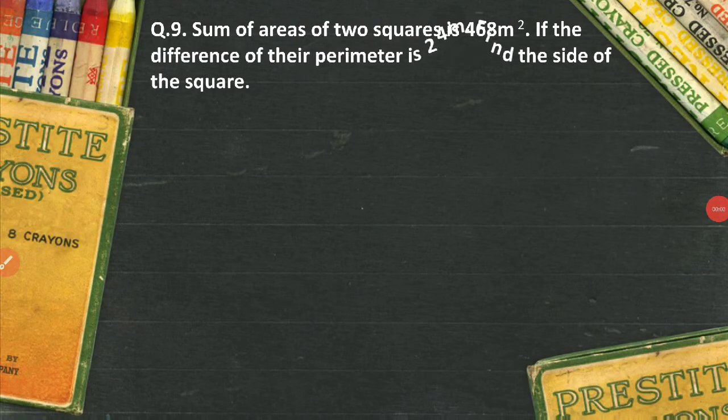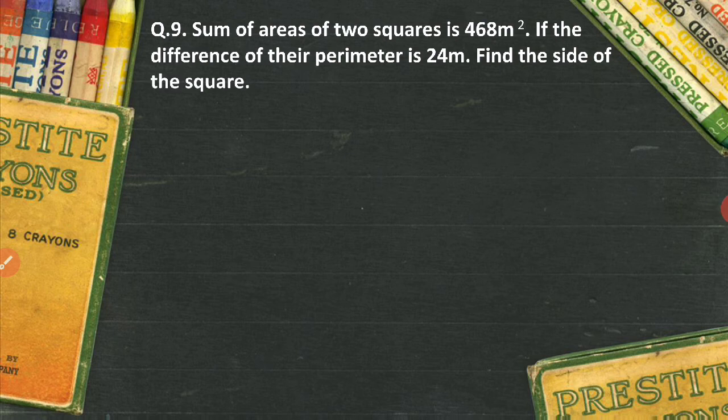Hey there, Joel here and welcome to my channel Math World. Today we're going to solve another problem from the chapter quadratic equation. The question is: sum of the areas of two squares is 468 meter square. If the difference of their perimeter is 24 meters, find the side of the square.